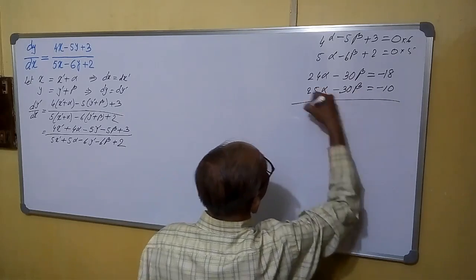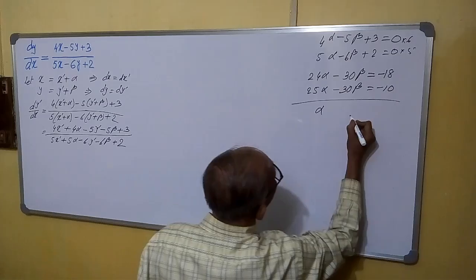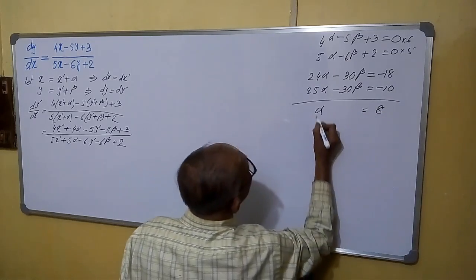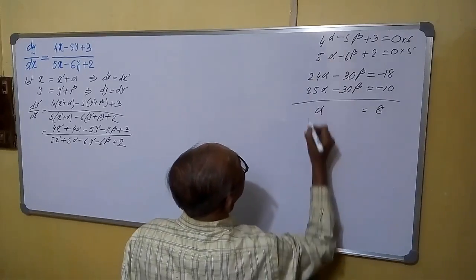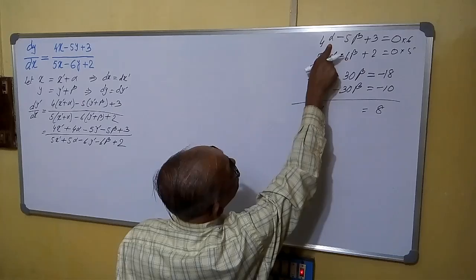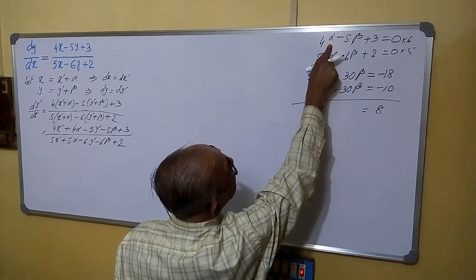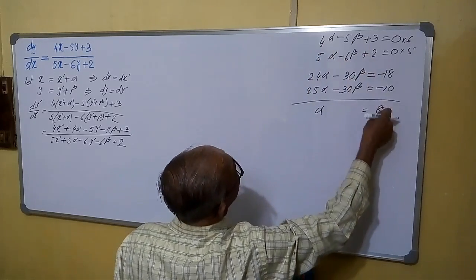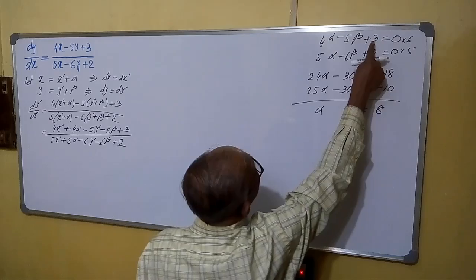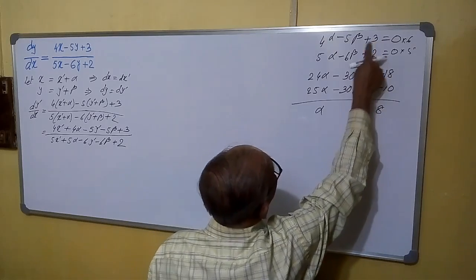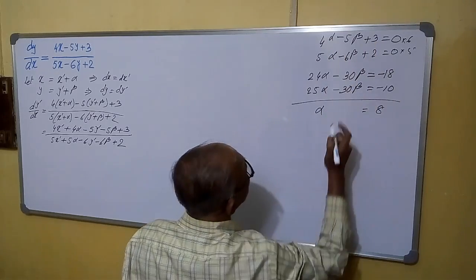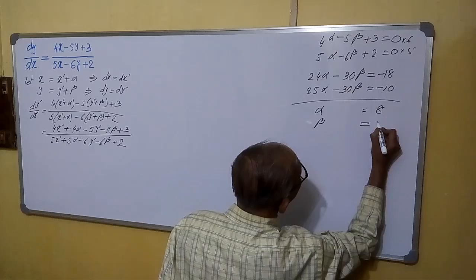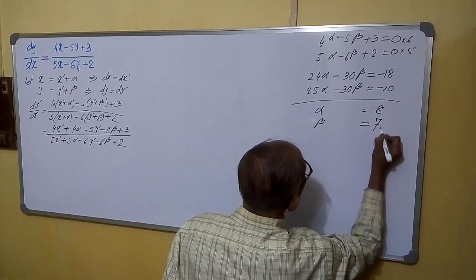By subtracting, we get alpha equals to 8. Putting this value of alpha: 4 into 8 is 32, plus 3 is 35. So 5 beta equals to 35, giving beta equals to 7.